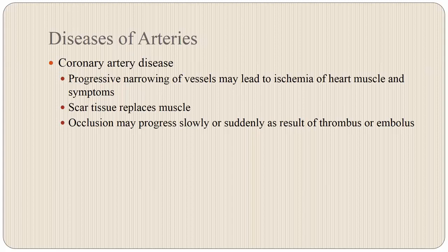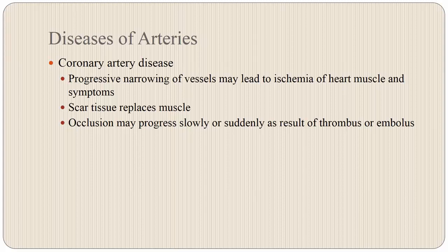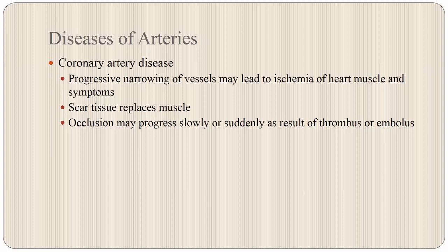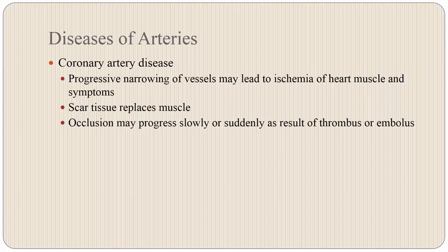Progressive narrowing of vessels leads to ischemia of the heart muscle and symptoms. It is important to distinguish between stable and unstable angina. Stable angina presents as a repeating pattern — for example, chest pain with walking a certain distance that is relieved by rest or nitroglycerin. Unstable angina is when usual interventions no longer provide relief — for instance, the patient takes nitroglycerin and there is no relief. Unstable angina is a medical emergency.